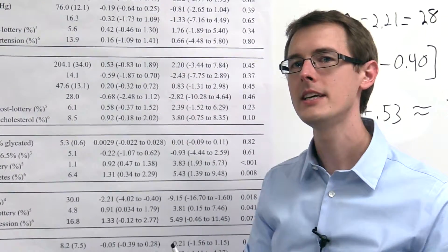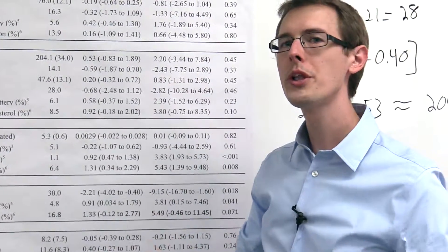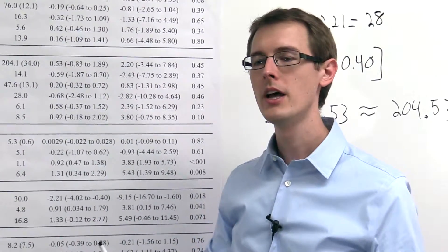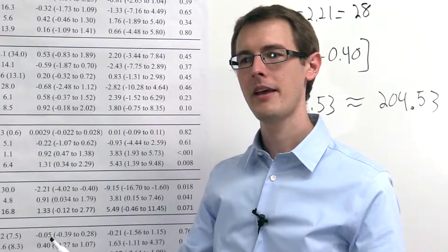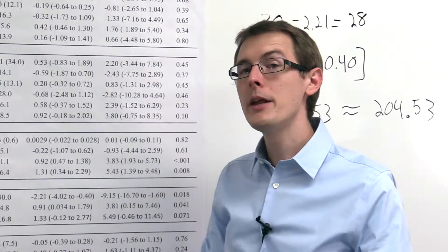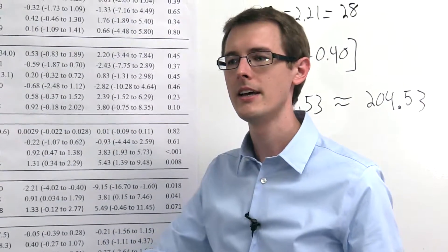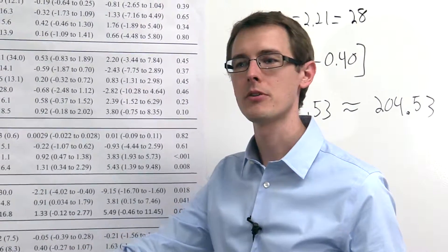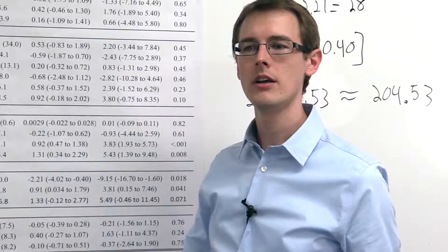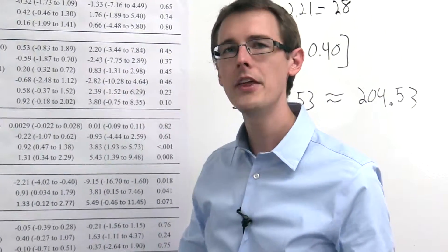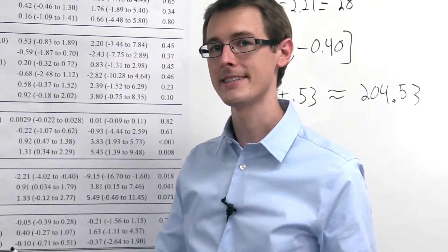Because remember, the whole idea behind randomized experiments is that it's only when you have a very large number of people that the two groups start to look the same. If you have a small number of people, then it might be that you just happened to put people who had, let's say, high cholesterol in the treatment group, or people who had low cholesterol in the control group, and then your groups wouldn't be exactly the same.